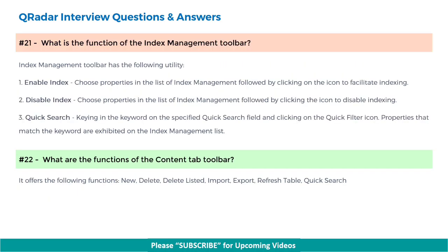Next, what is the function of the index management toolbar? The index management toolbar has the following utilities: First, enable index — choose properties in the index management list and click the icon to enable indexing. Second, disable index — choose properties in the index management list and click the icon to disable indexing. Third, quick search — key in the keyword in the quick search field and click the quick filter icon; properties that match the keyword are shown in the index management list.